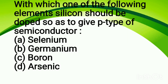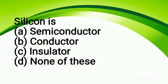Which one of the following elements should silicon be doped with to give a P-type semiconductor? Option A, selenium; option B, germanium; option C, boron; option D, arsenic. The correct answer is option C, boron. For P-type semiconductors, acceptor impurities are used. Conductivity occurs due to positively charged holes, and their movement gives the semiconductor its properties — allowing it to conduct electricity.